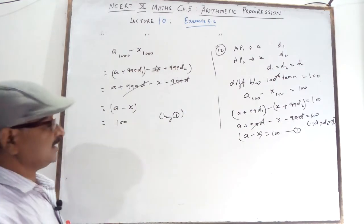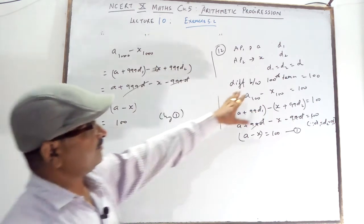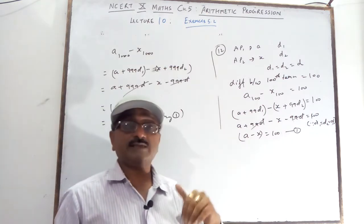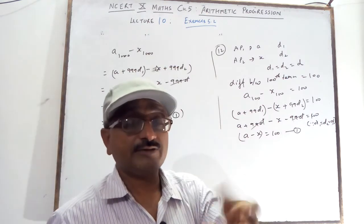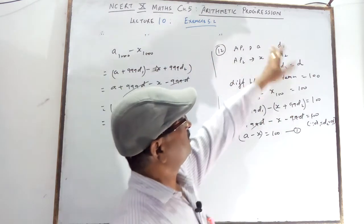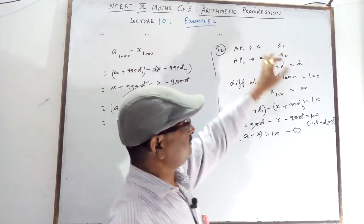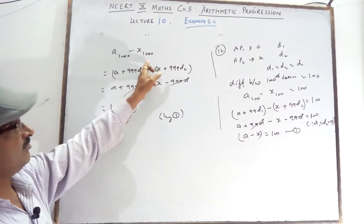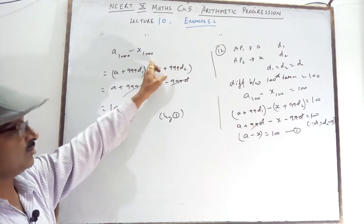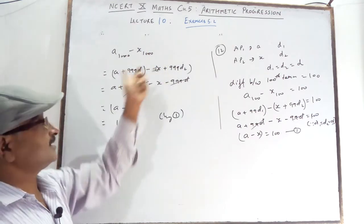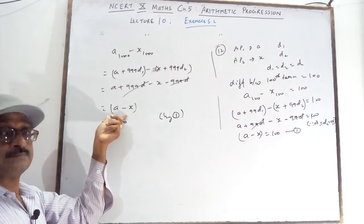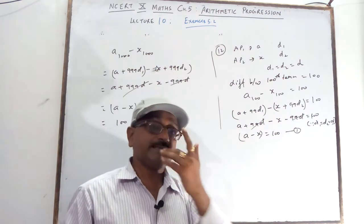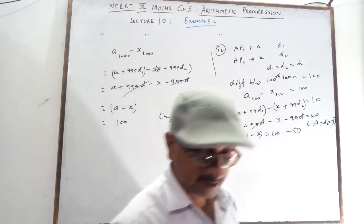So the 1000th term difference is also 100. In fact, for any nth term — whether it is the 2000th, 500th, or 20th — the difference between corresponding terms of the two APs is always equal to the first term difference, which is 100.